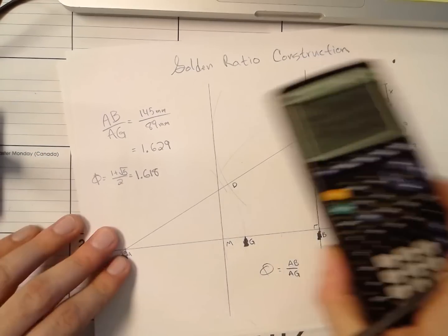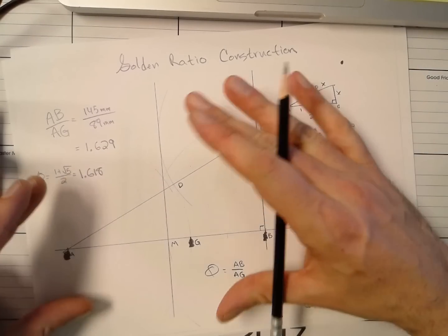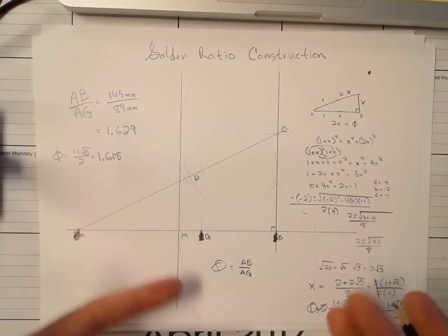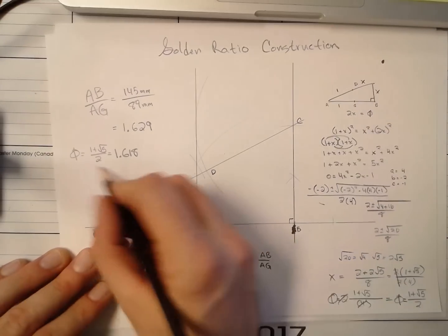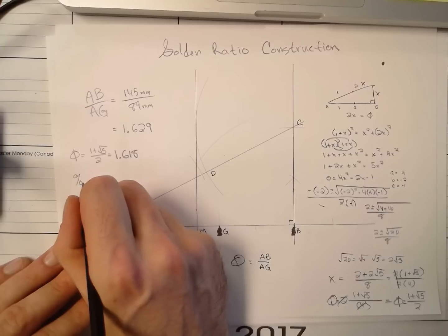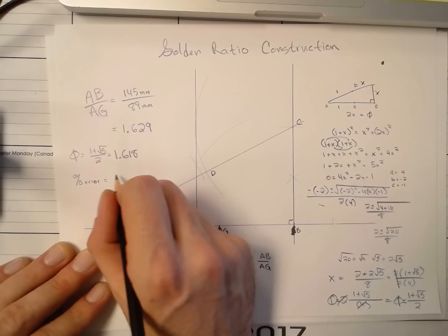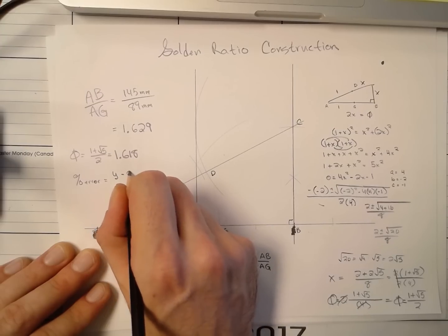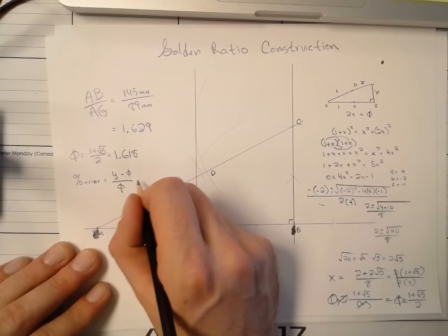And the last thing that I'm going to ask you to do... You don't have to, by the way, do this. You just need to do this picture and this measurement. This is just me showing you algebraically why this construction works. Okay. So, here's how we're going to do percent error, and then we'll call it a video. So, percent error is going to equal your value minus phi divided by phi times 100.